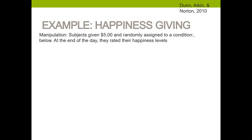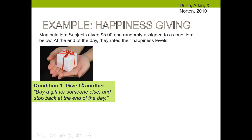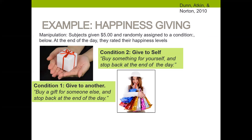What was the manipulation — the conditions? Condition one: participants were given $5 and told to buy a gift for someone else and stop back at the end of the day. They could even put the $5 in someone's tip jar — they needed to give it away or buy something for someone. Condition two: they were told to buy something for yourself and stop back at the end of the day. So we have a nice direct comparison between giving to another and giving to yourself.